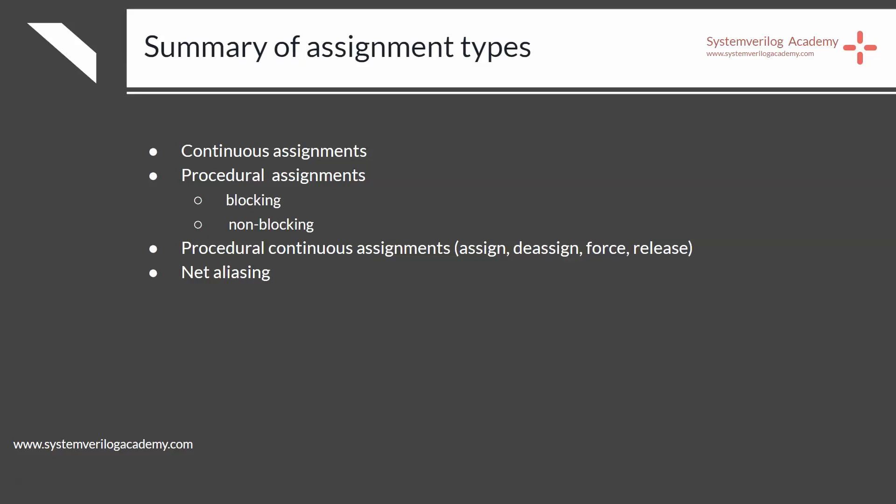There are four types of assignment statements in Verilog and SystemVerilog: continuous assignment, procedural assignments, procedural continuous assignments, and net aliasing. The last two — procedural continuous assignment and net aliasing — are not commonly used and therefore are not discussed here.